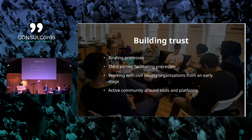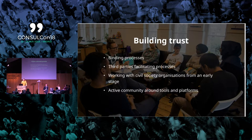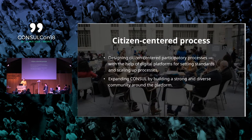Overall, this is about building trust with people, which can be done in many ways: by having binding processes, having independent organizations facilitate the processes, bringing in civil society at an early stage, and having an active community around the platform itself. What we want to do now is implement Consul for next year, design citizen-centered participatory processes, and use Consul as a way of scaling up and setting a standard. The way forward is to continue building a diverse community around the platform, bringing in experiences from many different countries and contexts.